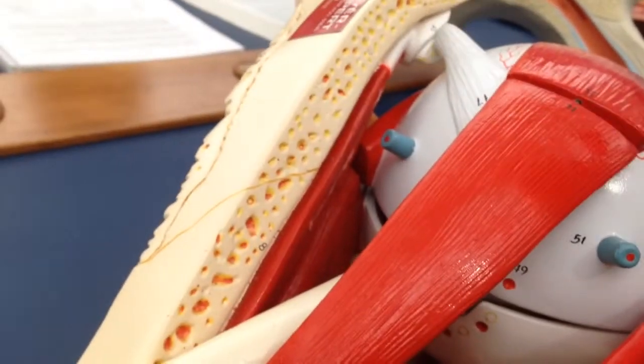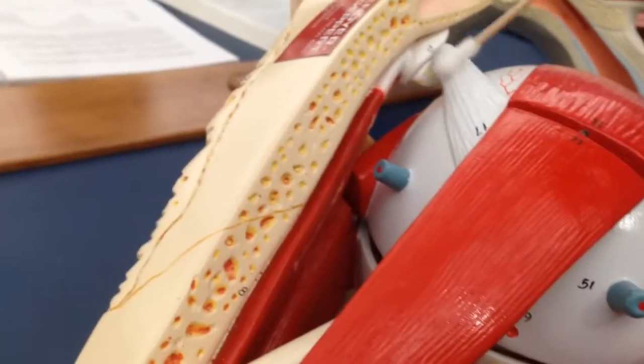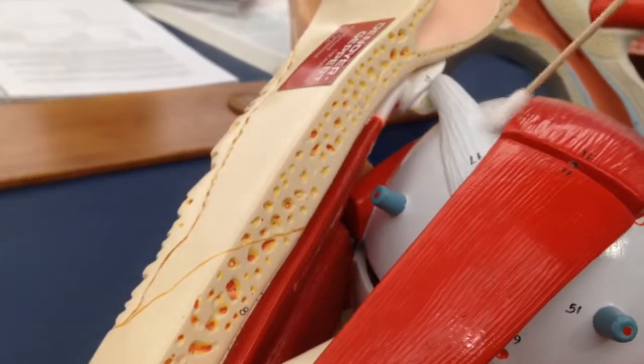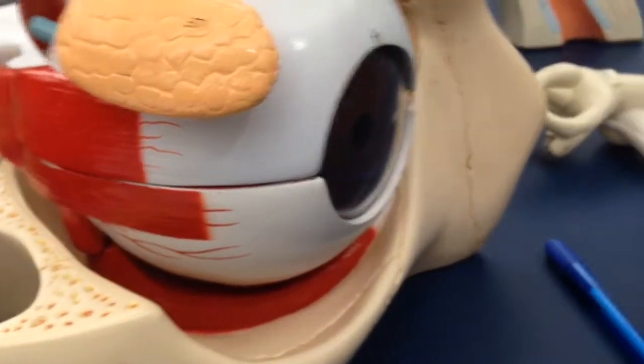This is your superior oblique, goes through the loop of the trochlea. Right here, trochlea. Inferior oblique muscle.